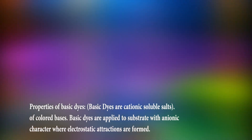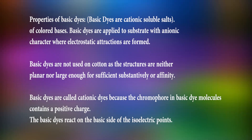Properties of basic dyes: these dyes are cationic soluble salts of colored bases. Basic dyes are applied to substrates with anionic character, where electrostatic attractions are formed. Basic dyes are not used on cotton as the structures are neither planar nor large enough for sufficient substantivity or affinity.